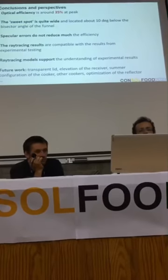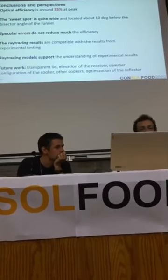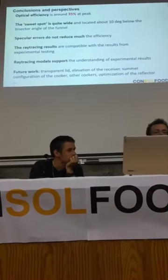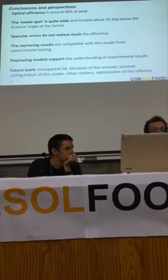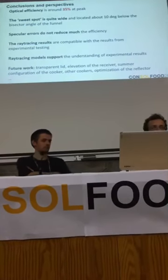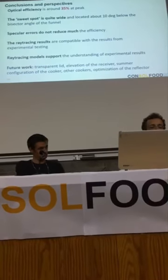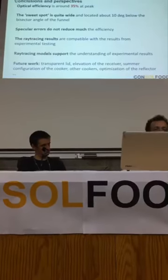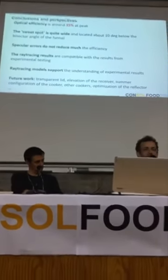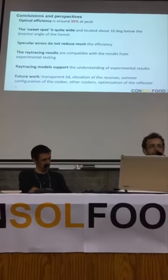Our conclusions and perspective: we have found that the optical efficiency is around 35% at peak, and the sweet spot is quite wide — a little bit about 10 degrees below the bisector angle. The specular errors do not reduce much the efficiency of this design. The ray tracing results are compatible and reasonable, and we have found that the ray tracing models support our understanding of the experimental results. We think of doing many more research using this model and others, and we plan to make it available to anyone who may want to do their own research about solar cookers.